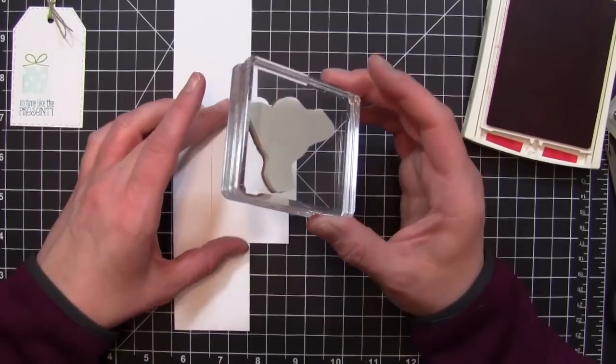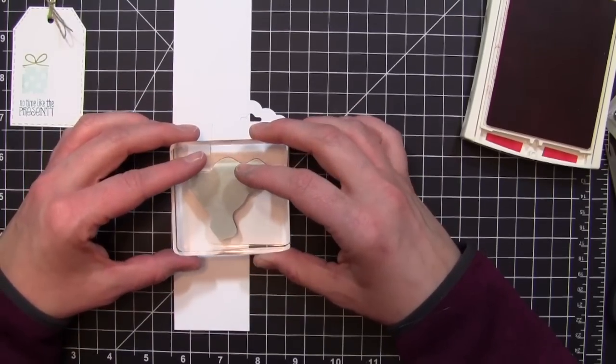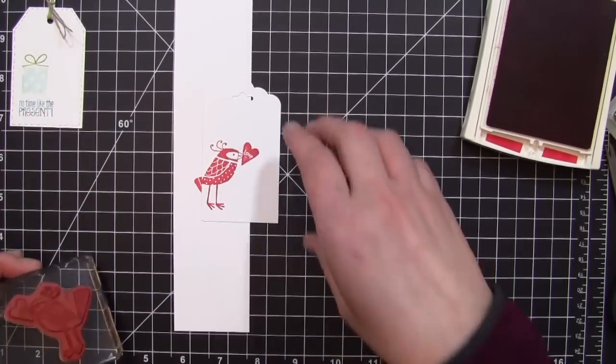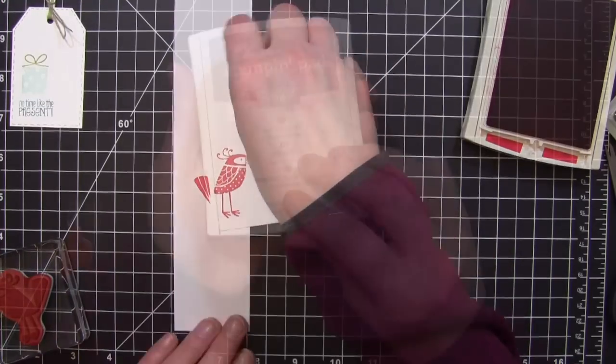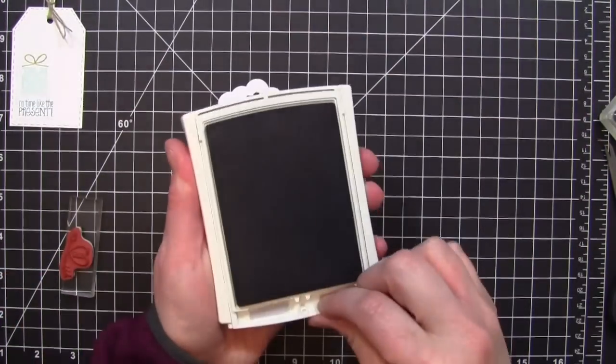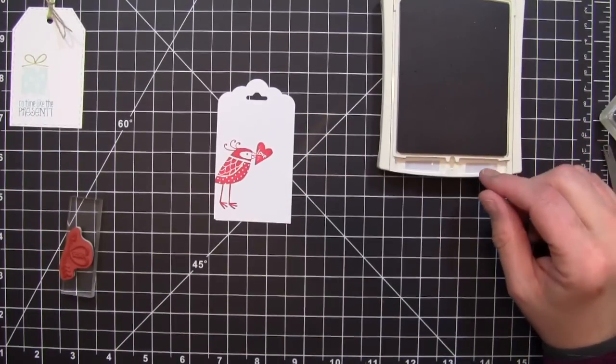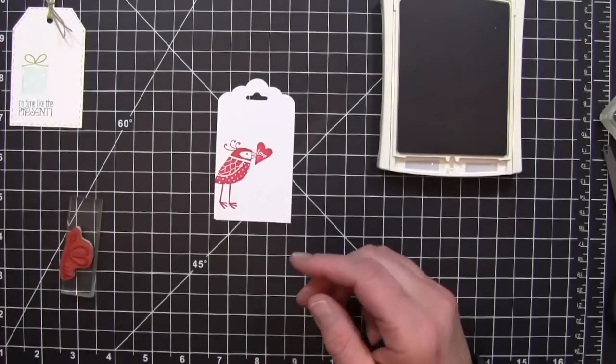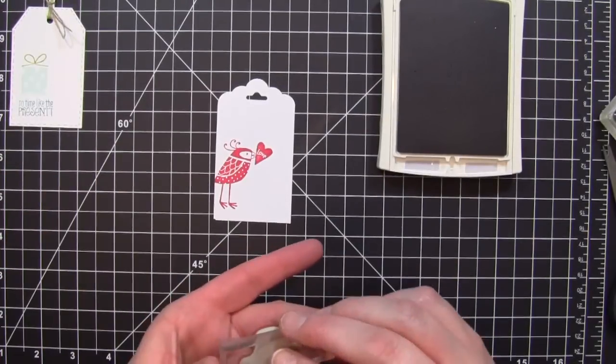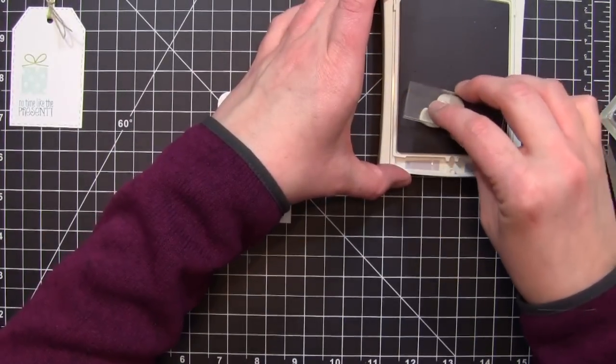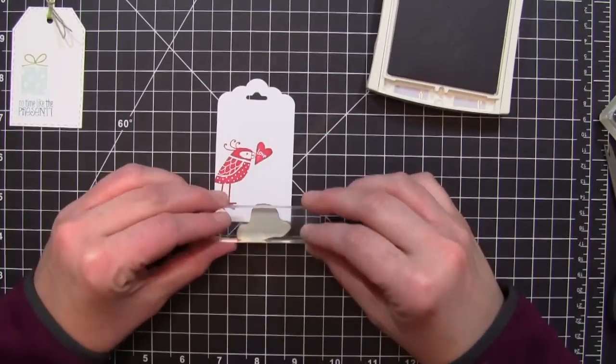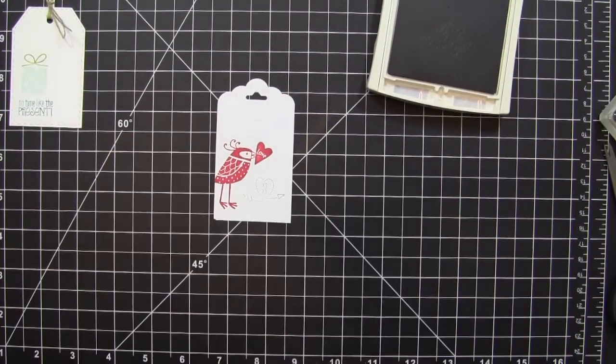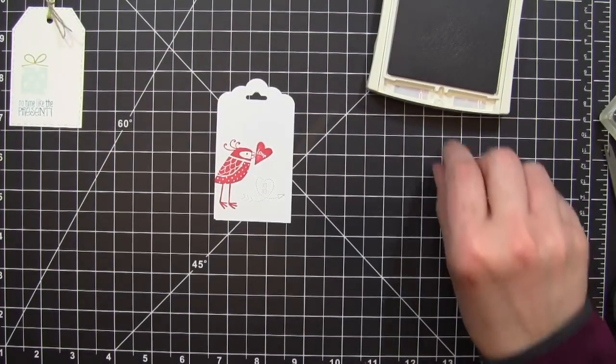Once I have that stamped, I'm going to add some of the Smoky Slate Stampin' Write marker right around the outside to do the faux stitch line. Then I'm going to use a sentiment from the stamp set Love You to the Moon. I love this little XO going around like a heart shaped arrow. I'm going to stamp that out using some Smoky Slate ink. I'll stamp that down in the lower right hand corner right below my little bird holding the little love Valentine.